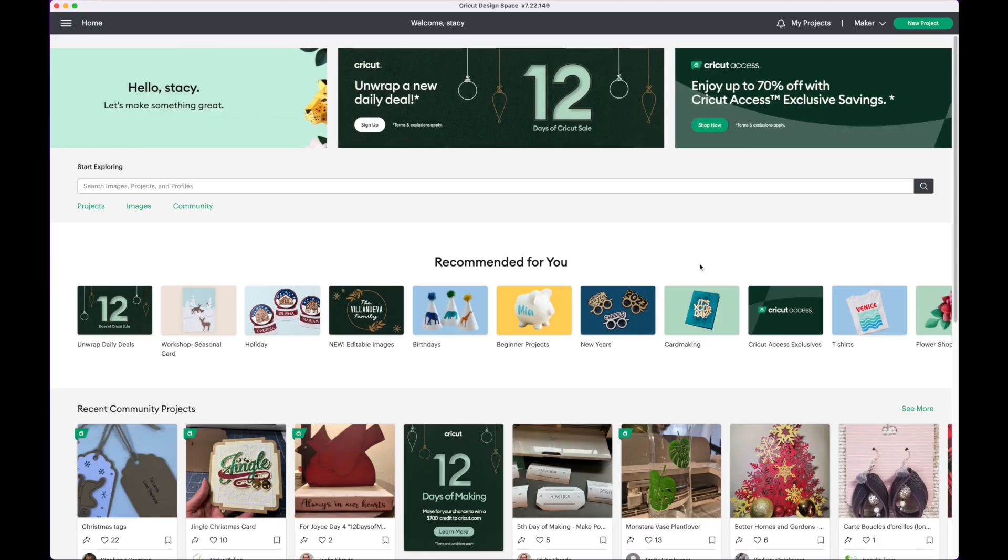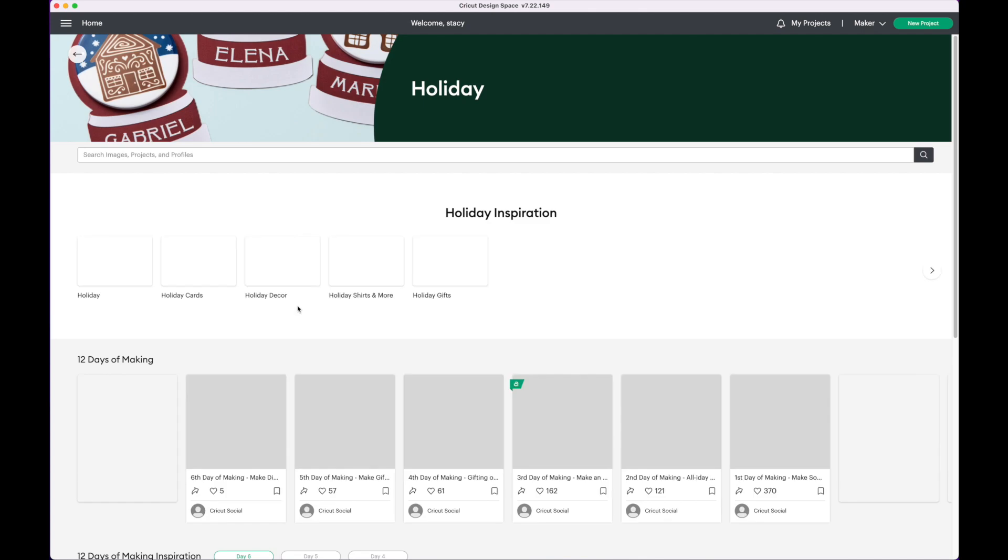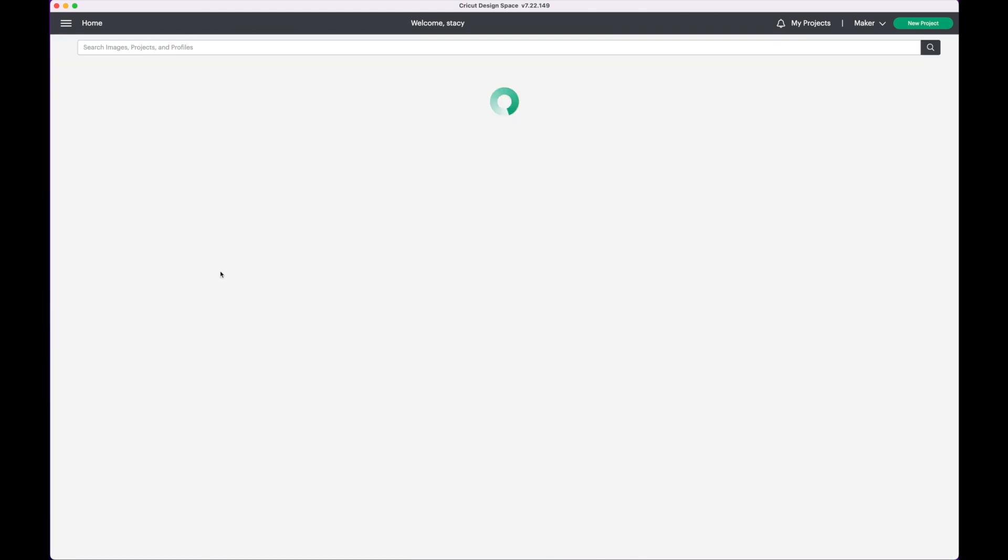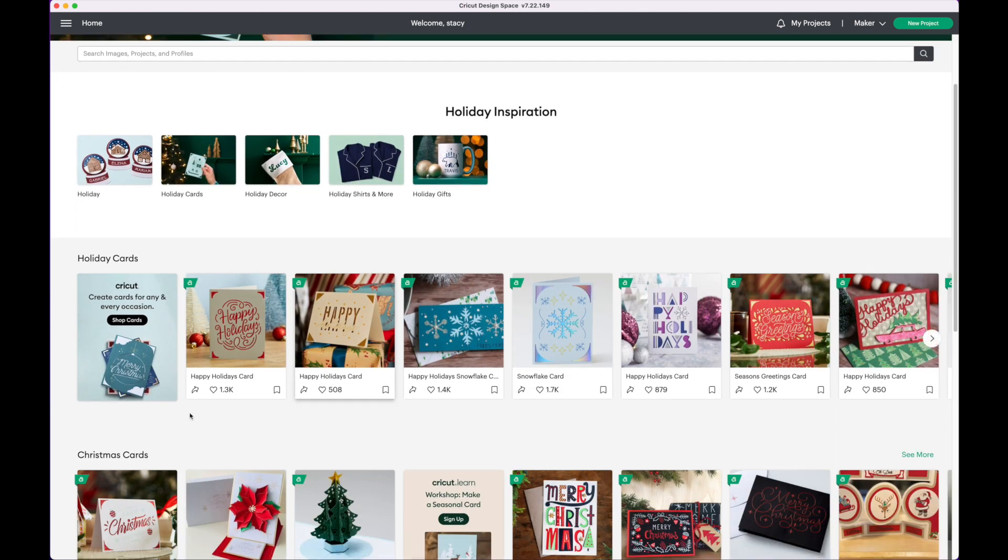Here we are at the computer. I'm already logged into Cricut Design Space. I am also on the welcome screen. From here we're gonna go right below where it says recommended for you and click on holiday. Then click on holiday cards and then scroll down. You want to go to the Christmas cards category. Go to the far right and click on where it says see more.